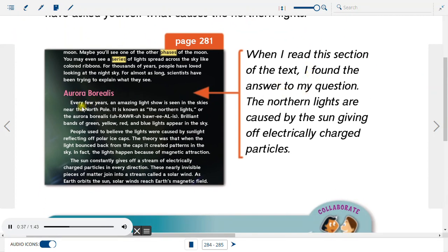Aurora Borealis. Every few years, an amazing light show is seen in the skies near the North Pole. It is known as the Northern Lights, or the Aurora Borealis. Brilliant bands of green, yellow, red, and blue lights appear in the sky. People used to believe the lights were caused by sunlight reflecting off polar ice caps. The theory was that when the light bounced back from the caps, it created patterns in the sky.